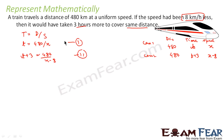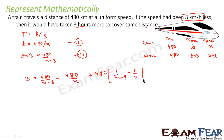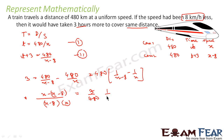Subtracting the two equations, t cancels, giving 3 equals 480 divided by x minus 8, minus 480 divided by x. Taking 480 as common and simplifying, 3 over 480 equals 1 over 160, and the numerator x minus x minus 8 gives 8. So x minus 8 into x equals 8 into 160, giving x squared minus 8x equals 1280.